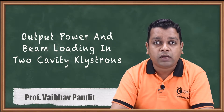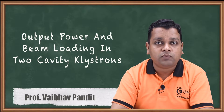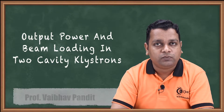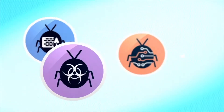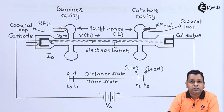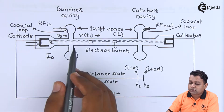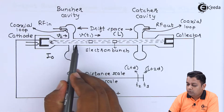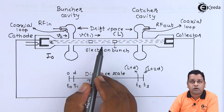In the previous videos, we covered the very popular microwave tube working as an amplifier — the 2-cavity klystron. We have seen the working procedure depends on the principle of velocity modulation, which we verified, along with the derivation for the transit angle and the bunching process. Velocity modulation occurs at the gap spacing between the grids of the buncher cavity, and the bunching process in the drift space was also covered in the previous video.